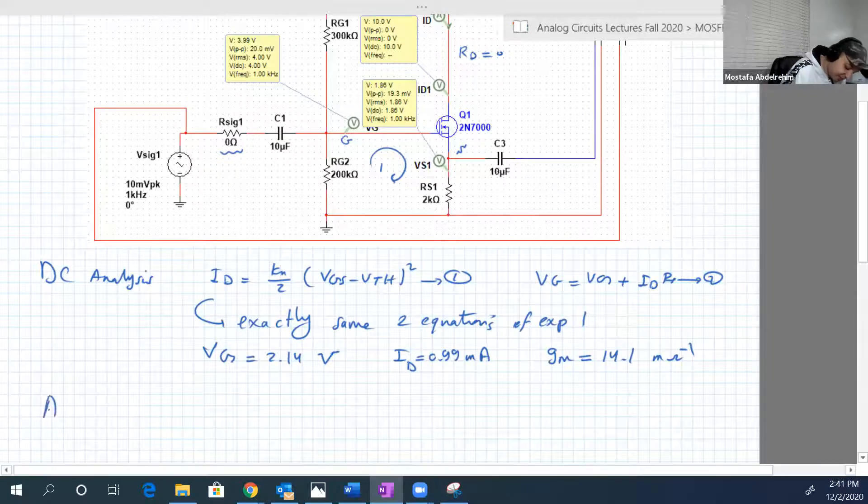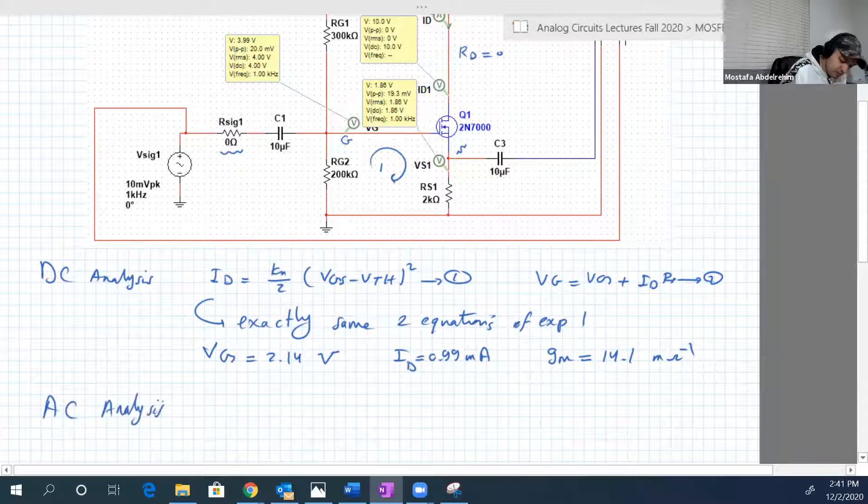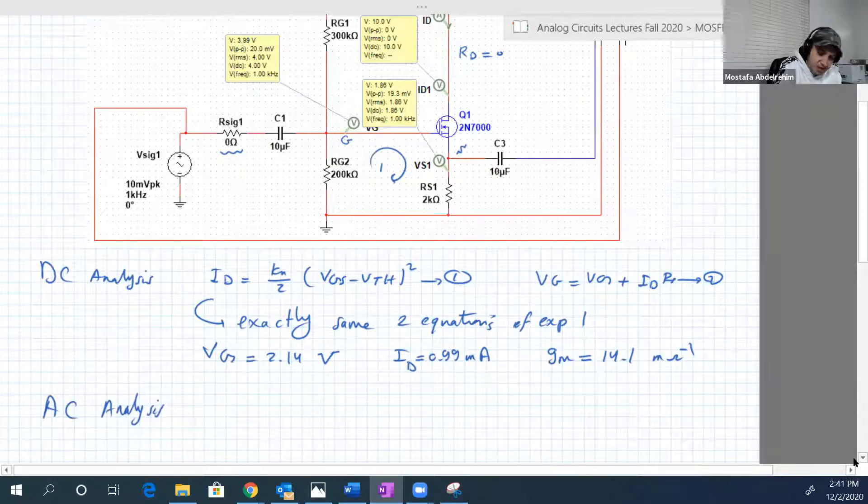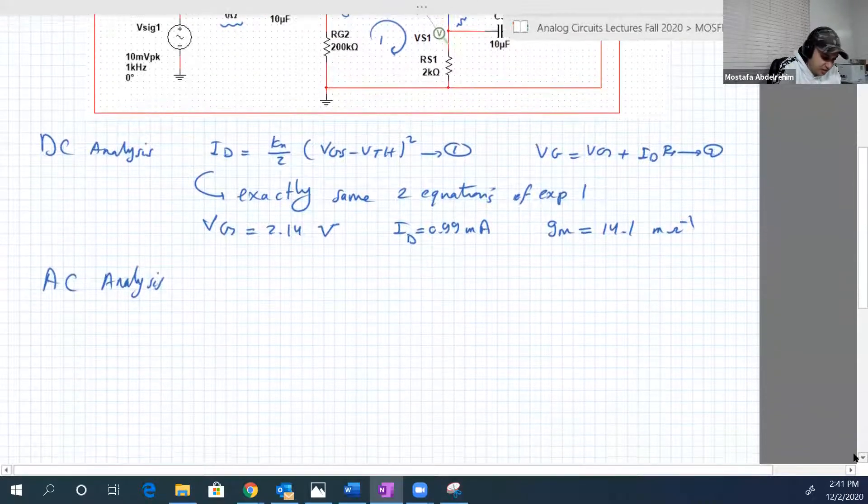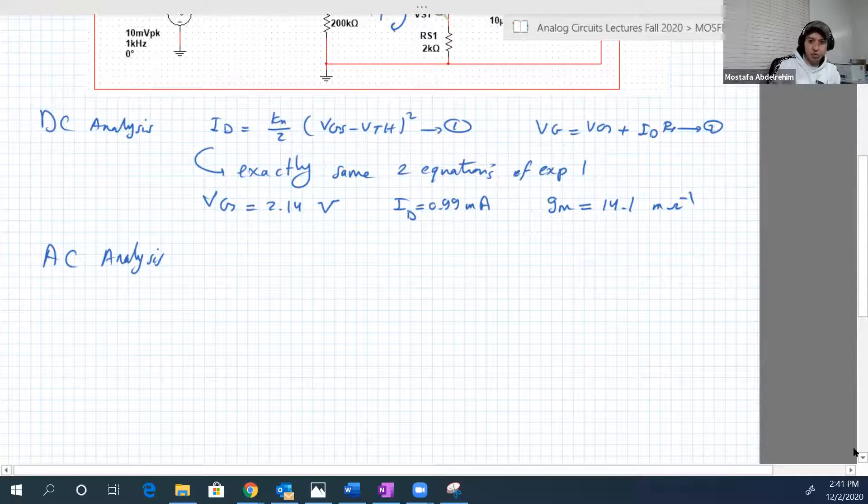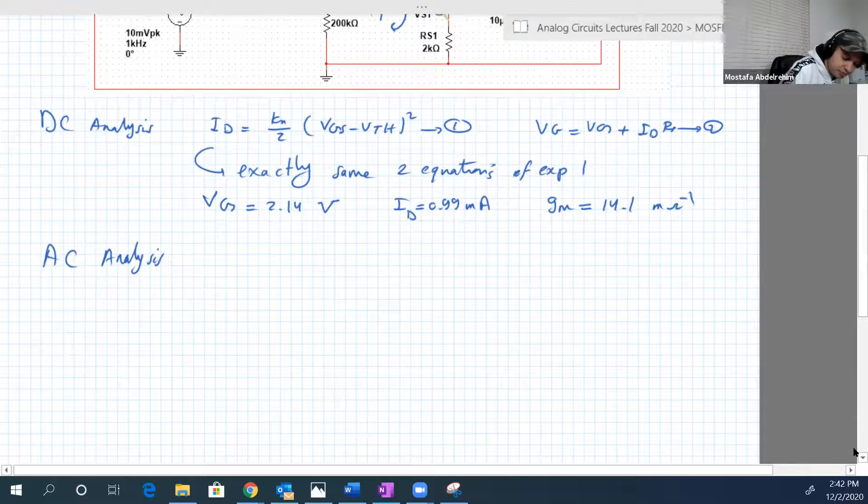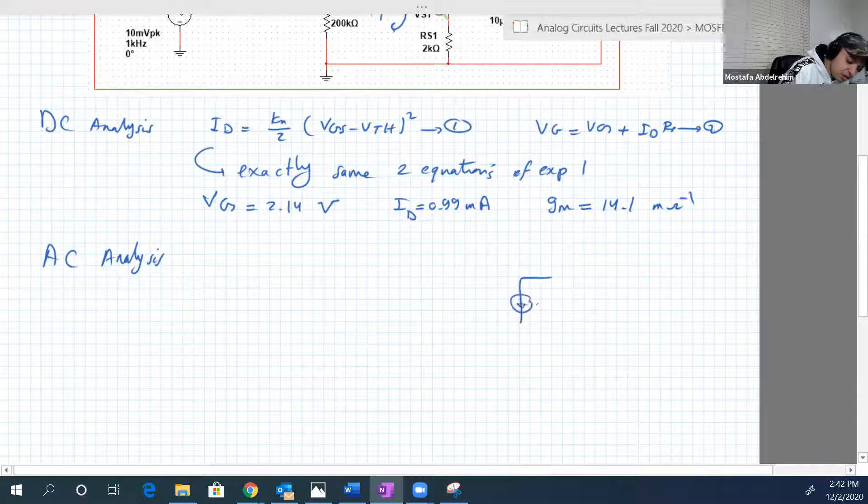Now the AC analysis. Here is the fun part, so let's draw the equivalent circuit. Again, there are two equivalent circuits, you can use any of them, with either common source, common drain, common gate. You should get each time the same solution. So I just go with the first one, the regular one, because I like to see open circuit.